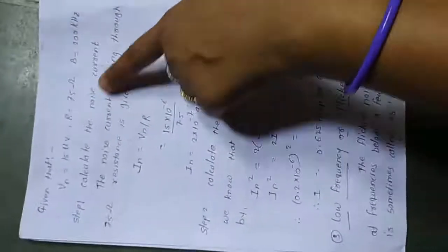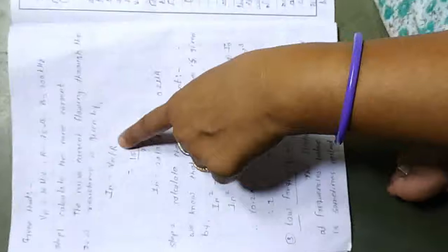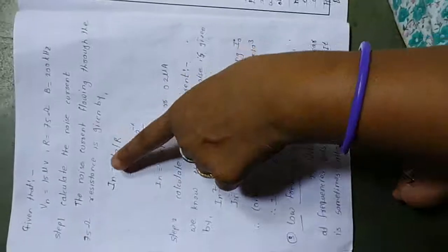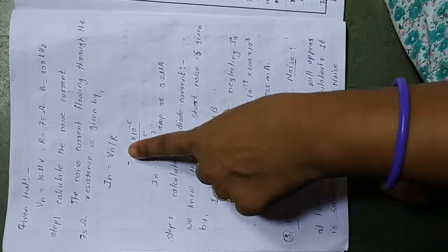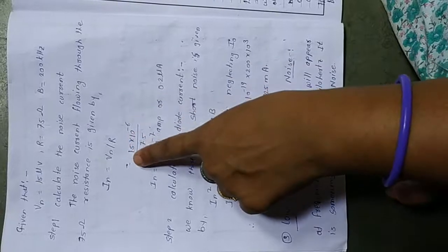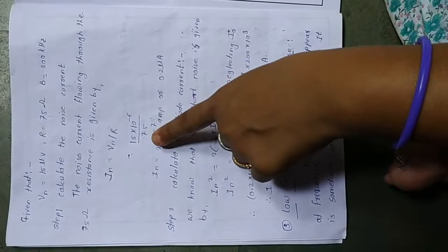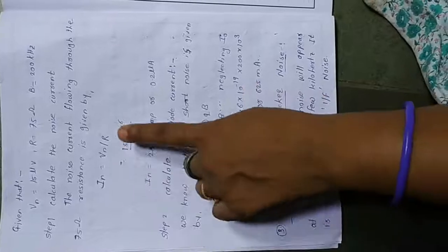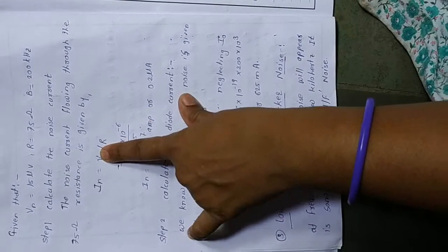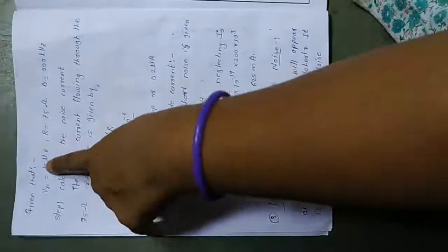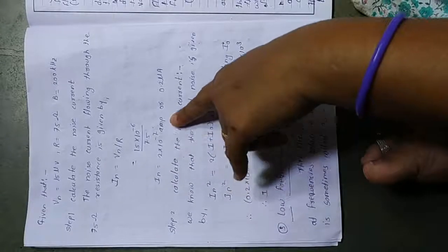Step 1: Calculate the noise current. The noise current flowing through the 75 Ω resistor is given by Ohm's law: current is inversely proportional to resistance. Therefore, I_n = V / R = (15 × 10⁻⁶) / 75. Since the voltage is given in microvolts, we multiply by 10⁻⁶. The result is I_n = 2 × 10⁻⁷ amperes.